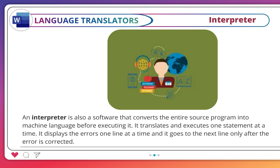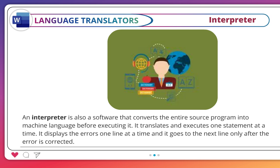An interpreter is also a software that converts the source program into machine language before executing it. It translates and executes one statement at a time, and it displays the errors one line at a time, going to the next line only after the error is corrected.